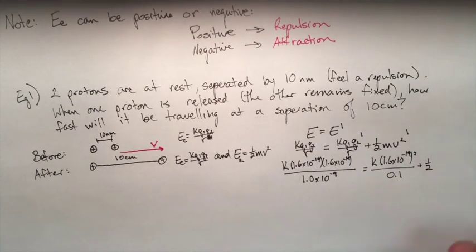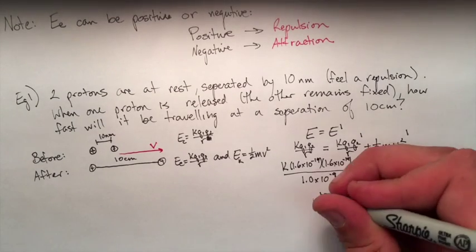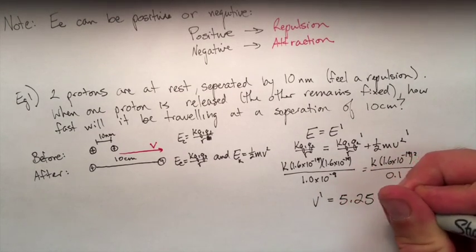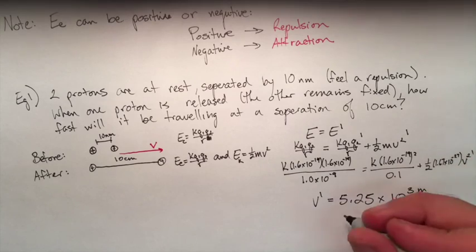On the right-hand side of the equation, we have two charges that are the same, so we can just square those charges. Divide it by 0.1, right? That's 10 centimeters. Here we'll solve for velocity. It ends up being 5.25 times 10 to the 3 meters per second.